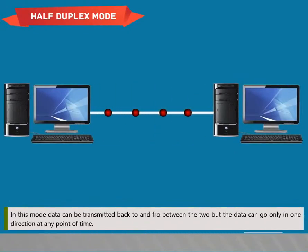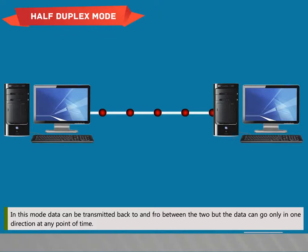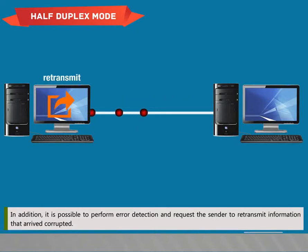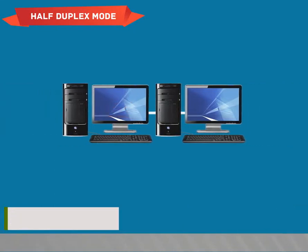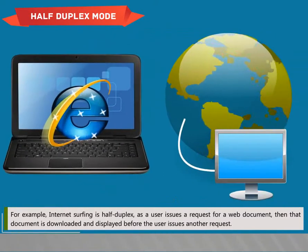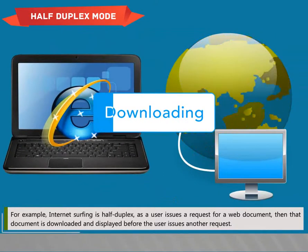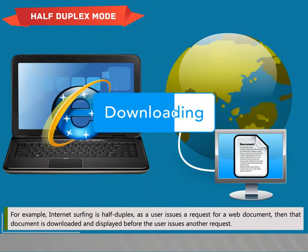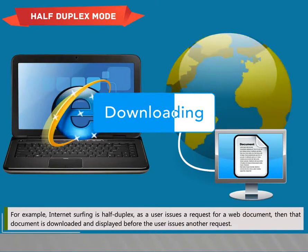In Half Duplex mode, data can be transmitted back and forth between two devices, but data can go in only one direction at any point in time. It is possible to perform error detection and request the sender to retransmit corrupted information. For example, internet surfing is half duplex: a user issues a request for a web document, then that document is downloaded and displayed before the user issues another request.